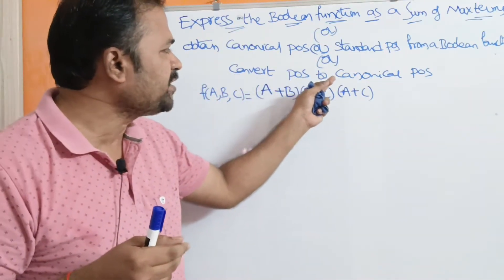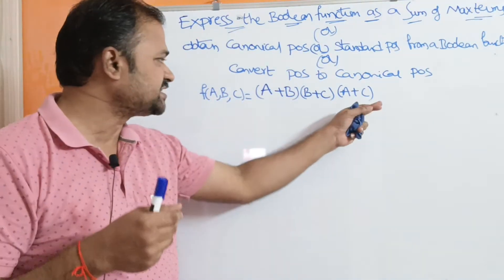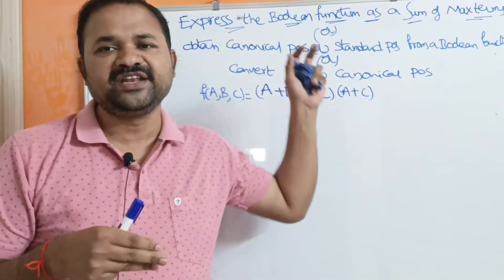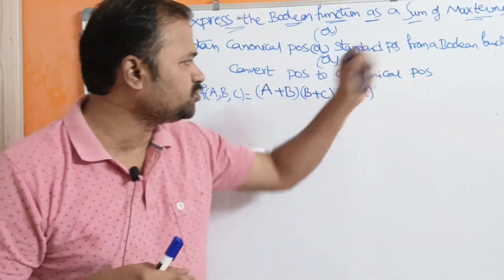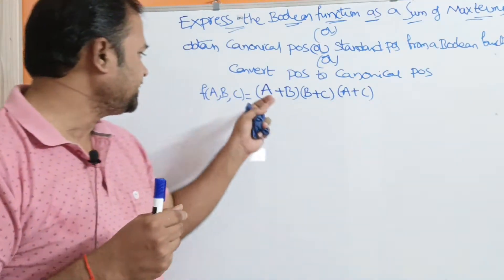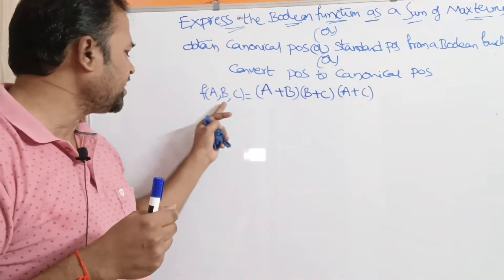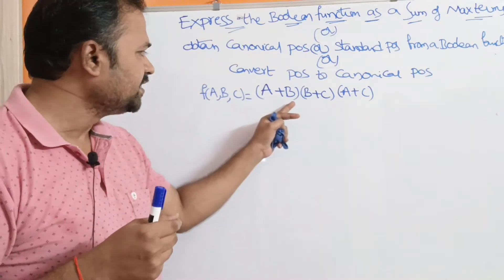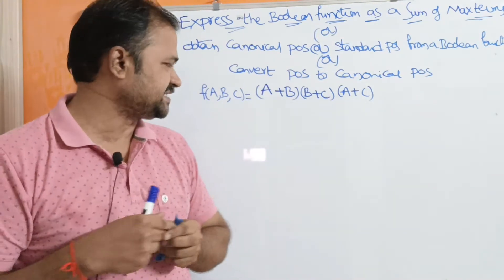We need to convert POS to canonical POS. This expression is in the form of POS, and we need to convert this expression toward canonical POS. The function given is F(A, B, C) = (A + B)(B + C)(A + C).